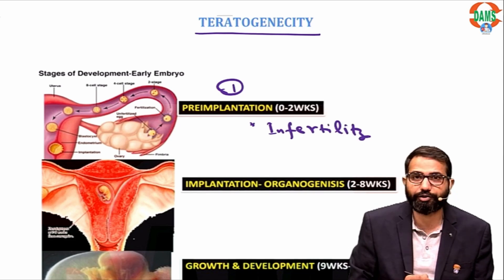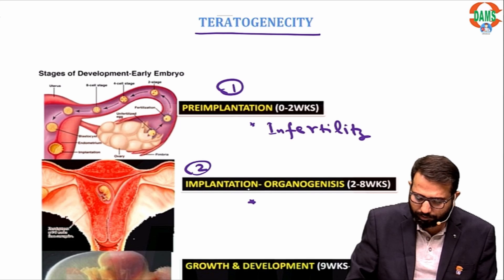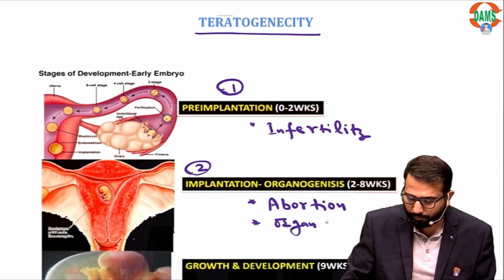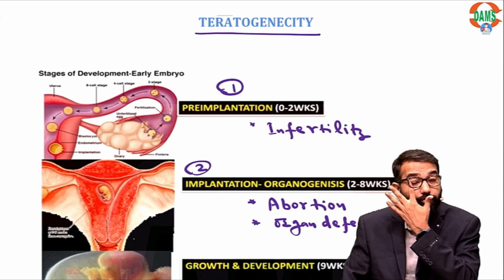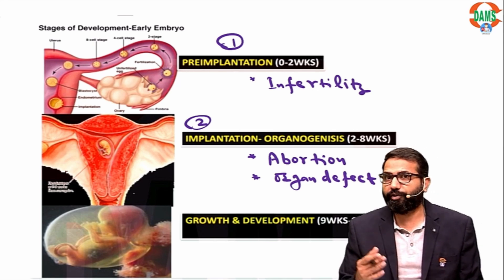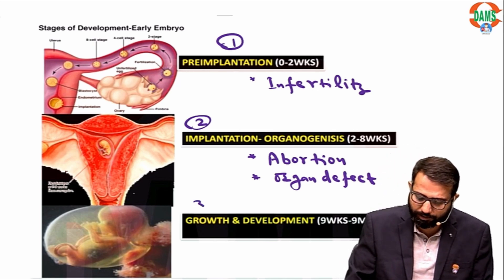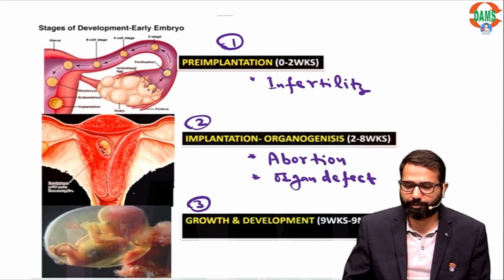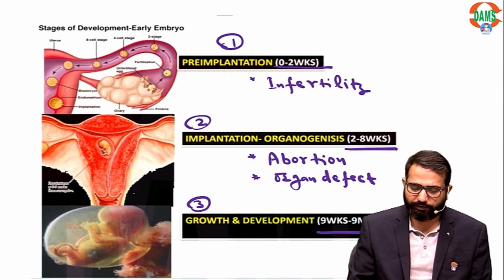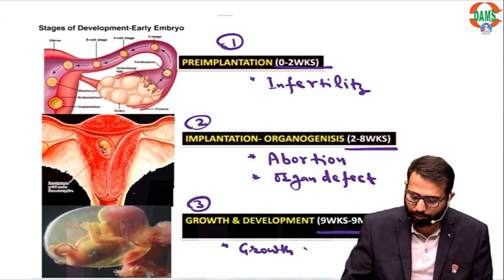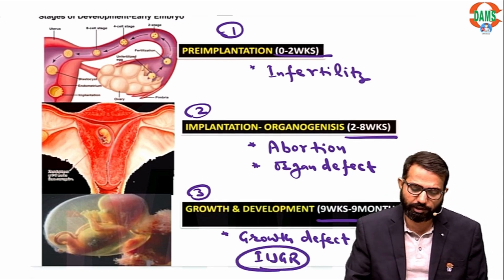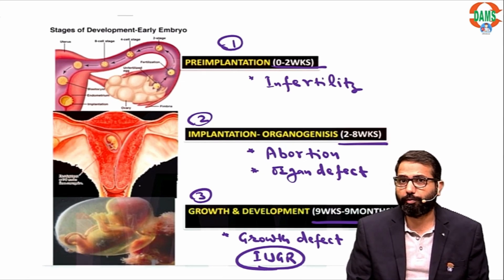Infertility issues: implantation does not occur, meaning abortion. Organogenesis — organ defects are present from 2 to 8 weeks (day 15 to day 55). After 9 weeks to 9 months, there are growth and development defects. Growth defects include IUGR and IUD. So all three possibilities exist: infertility, abortion, organ defects, and IUGR.